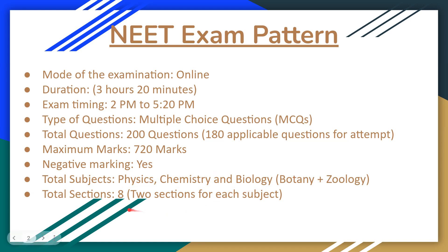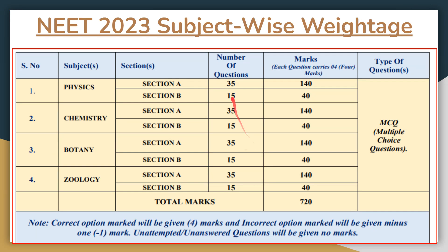There will be a total of eight sections — two sections for each subject. Section A of each subject shall comprise 35 questions for 140 marks, and Section B of each subject shall comprise 15 questions for 40 marks. This makes the total marks of the examination 720.